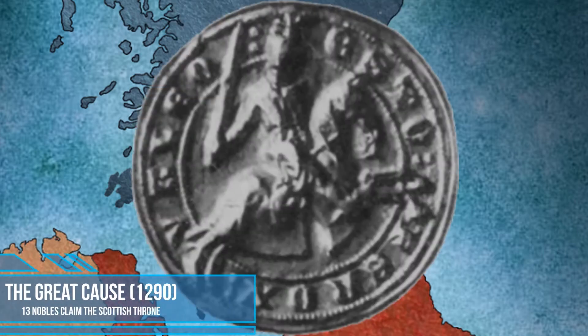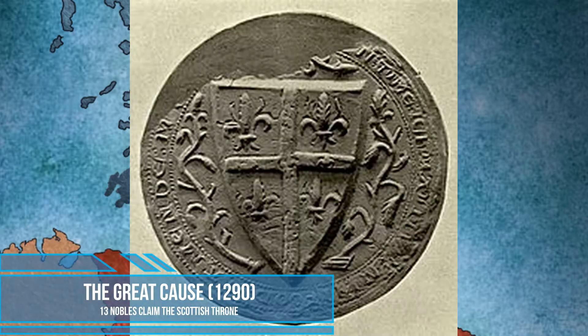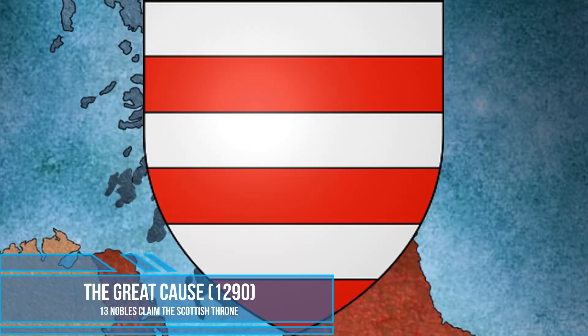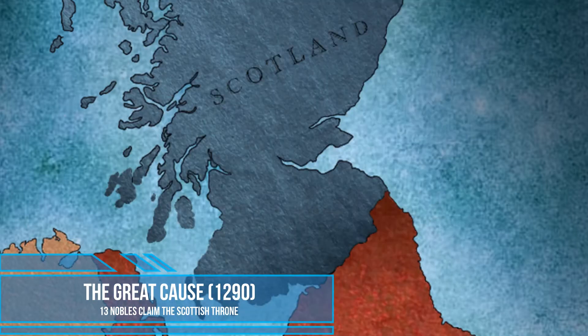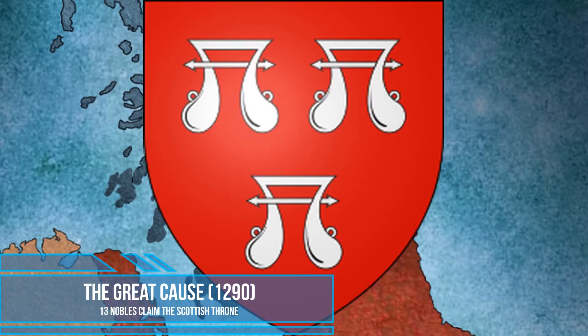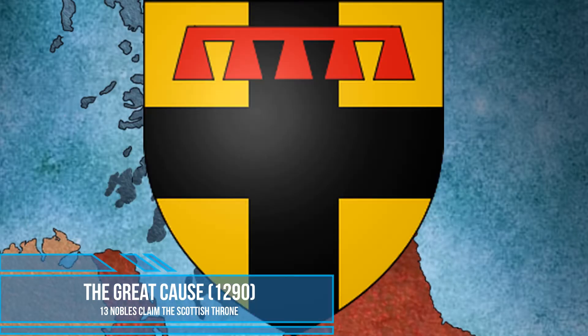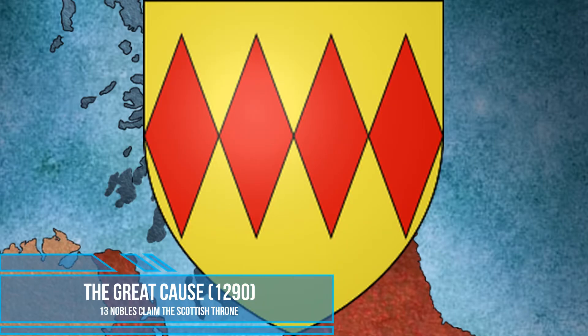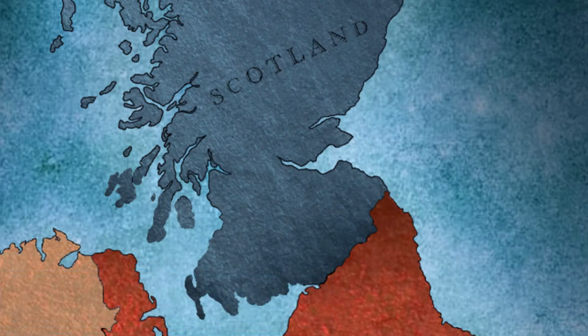Thirteen nobles — John Balliol, Robert de Bruce, John Hastings, Floris V of Holland, John Comyn, Nicholas de Soules, Patrick Galafie, William de Rose, William de Vescai, Patrick Dunbar, Roger de Mandeville, Robert de Pinckney, and Eric II of Norway — all claimed to be the legitimate heir to Alexander III of Scotland.